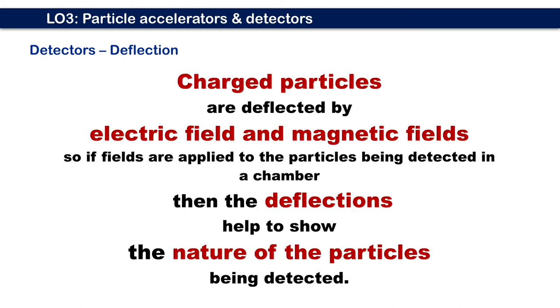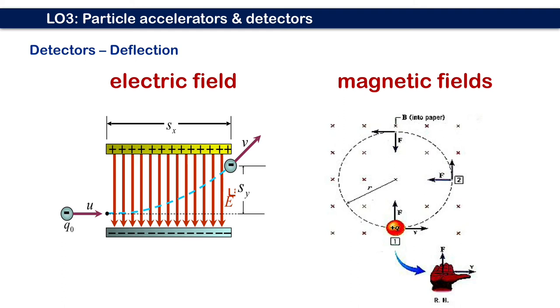Charged particles are deflected by electric and magnetic fields. So if these fields are applied to the particles being detected in a chamber, then the deflection helps to show the nature of the particles being detected. In a detector, the electric field and magnetic field were used in order to deflect the particles.